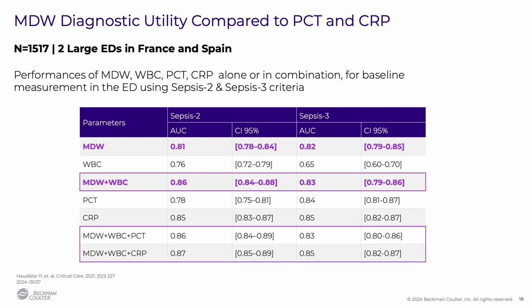The European pivotal trial also analyzed changes in diagnostic performance across common infection markers alone and in combination. Combining procalcitonin or C-reactive protein with MDW plus white blood cell count did not show any significant increase in diagnostic power. So basically, combining MDW and white blood cell count results had similar diagnostic utility to C-reactive protein and procalcitonin.